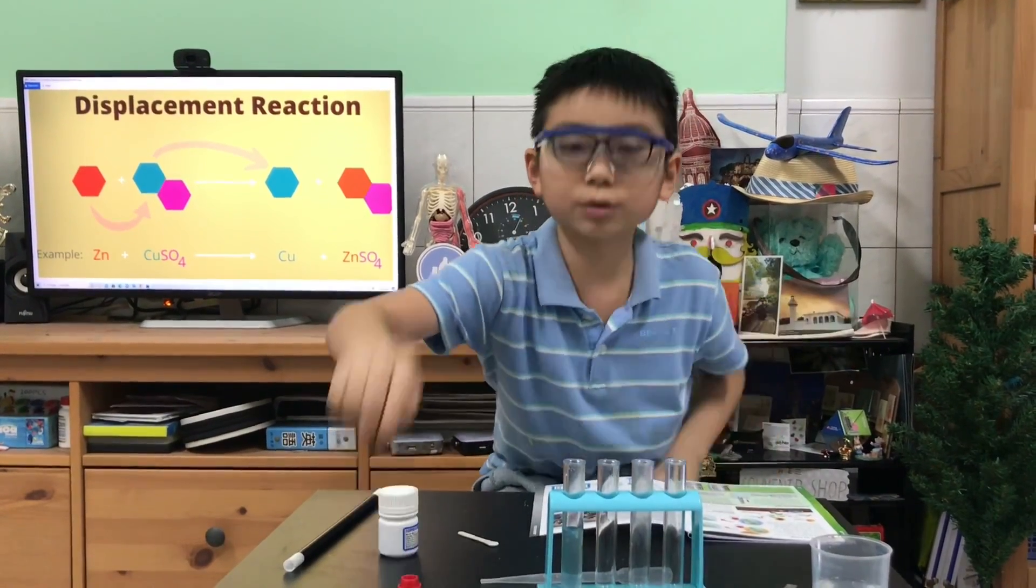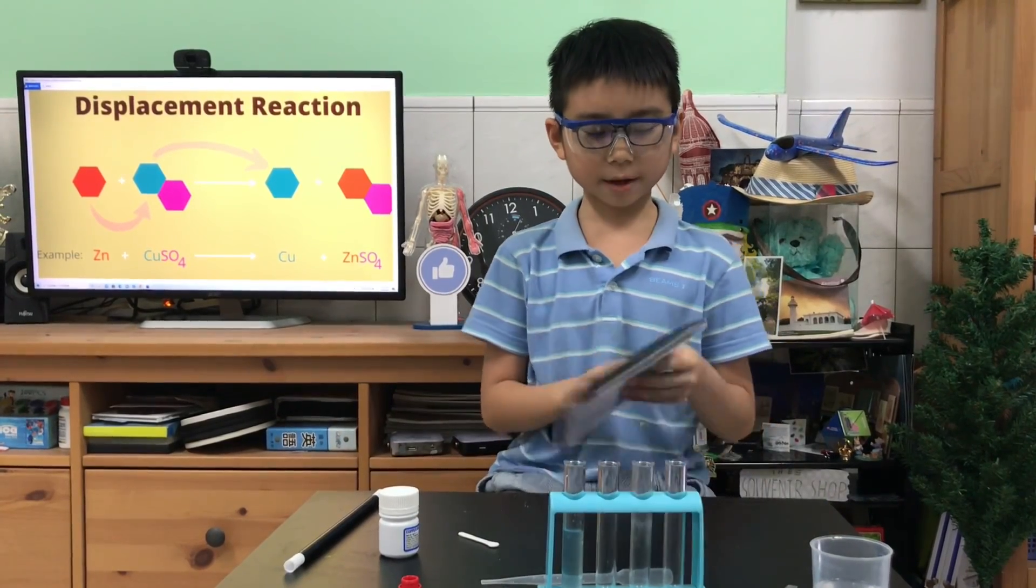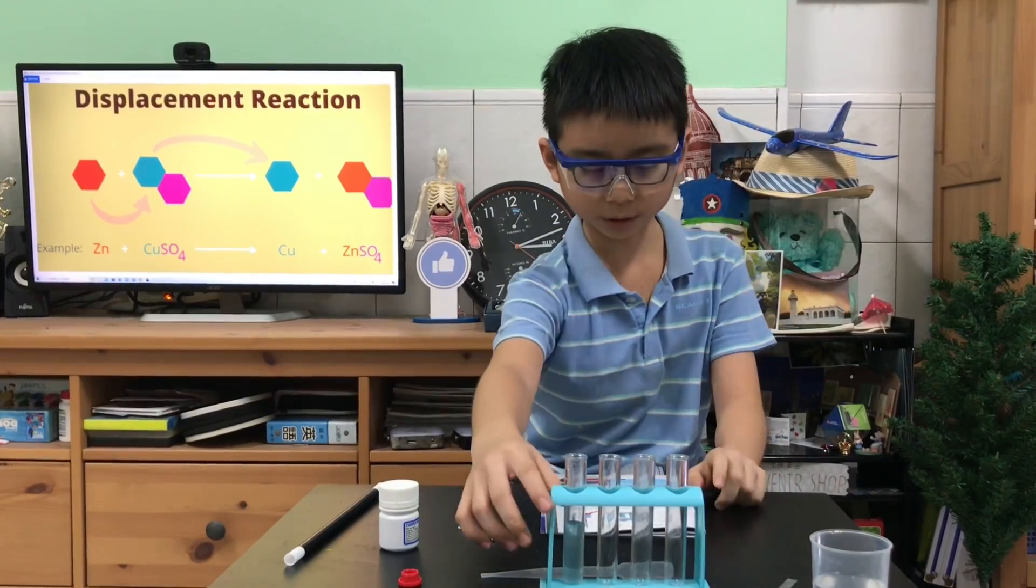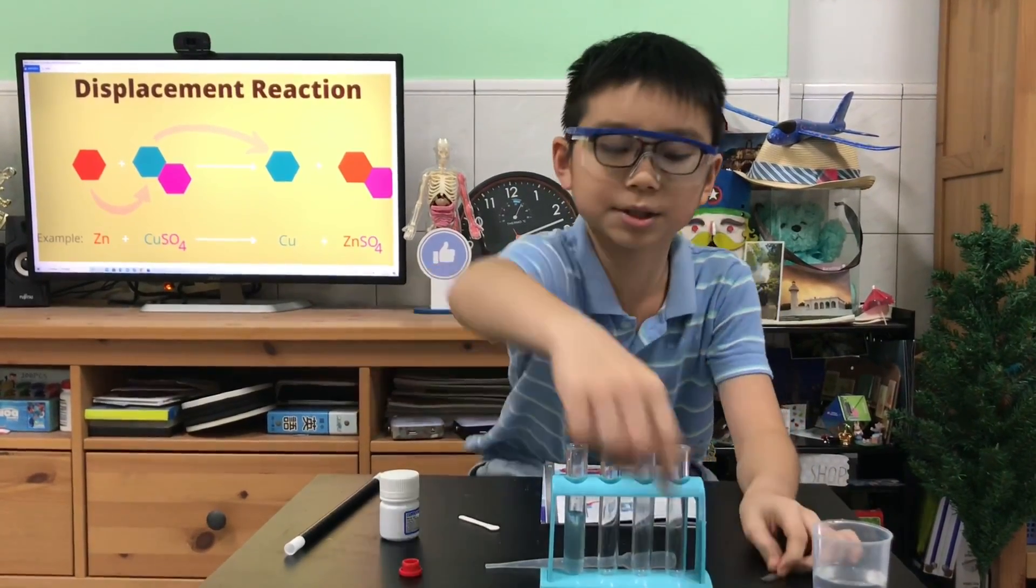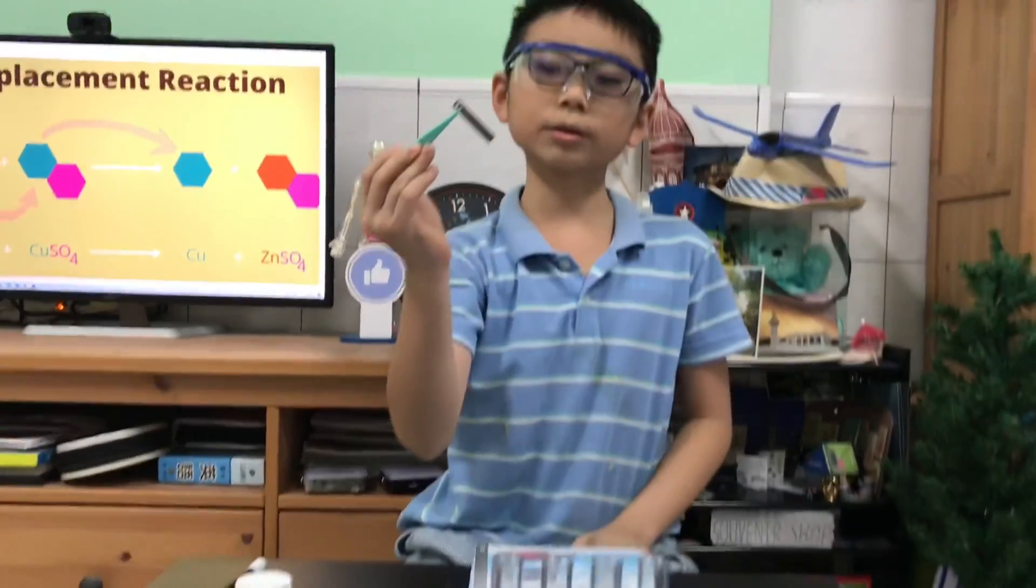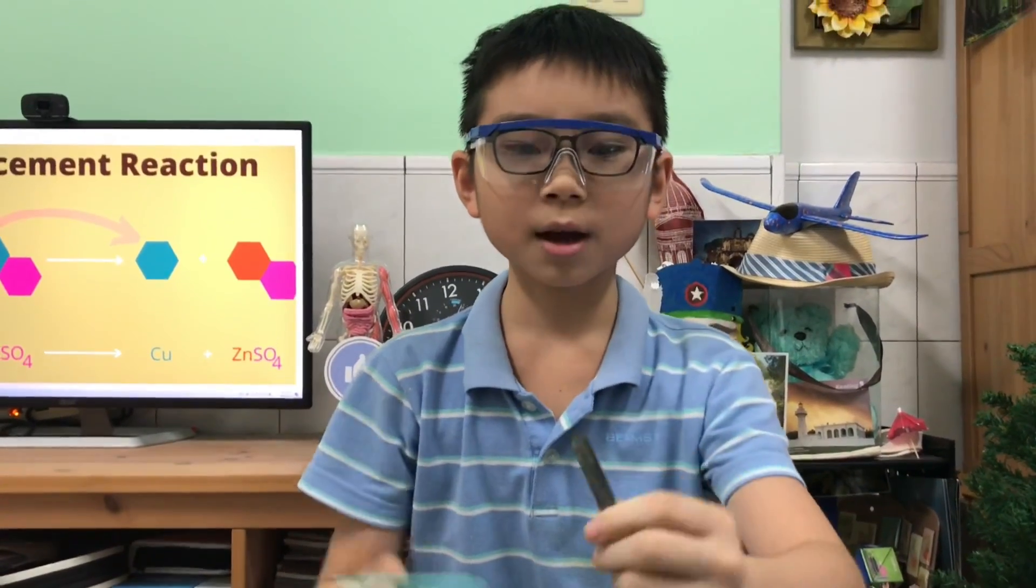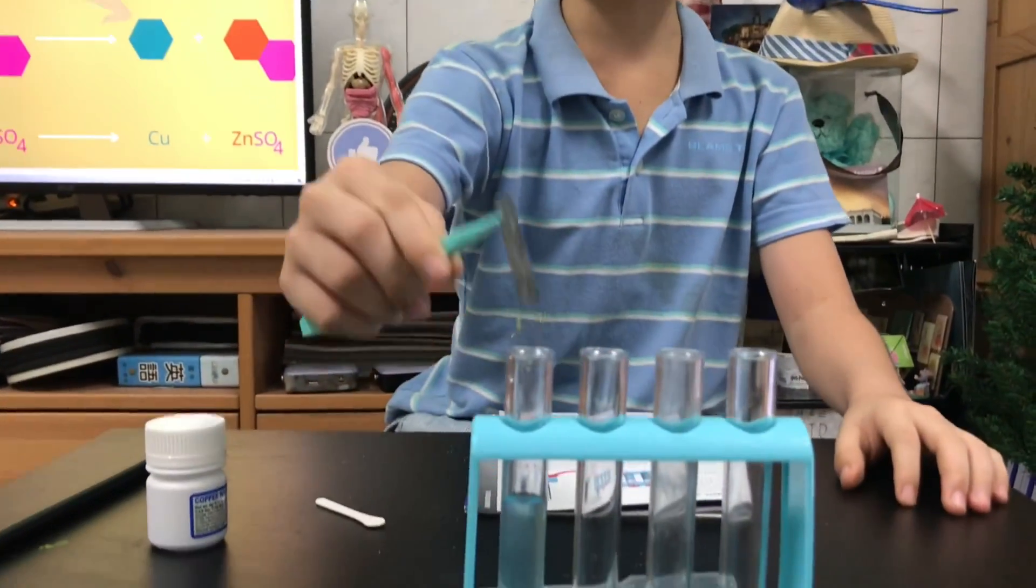Now we're going to do the displacement reaction. Okay, so we have the copper sulfate solution right here and we're going to put in a piece of zinc metal. This metal right here. So at first glance it looks grey. Now we are going to put it inside the copper sulfate solution.